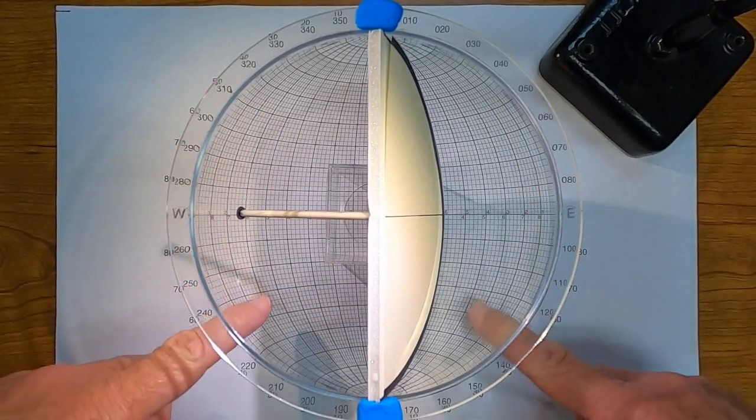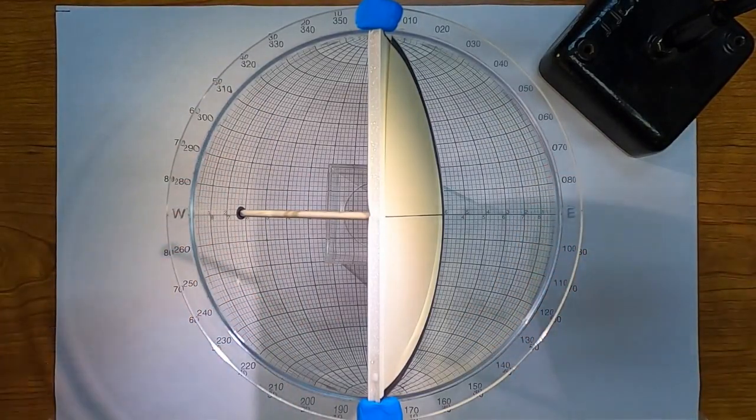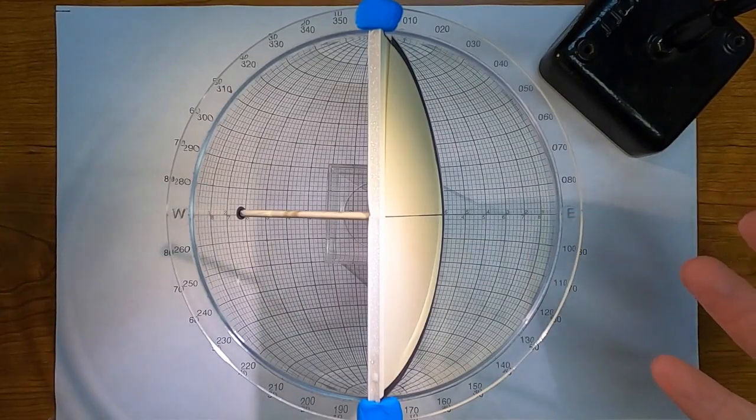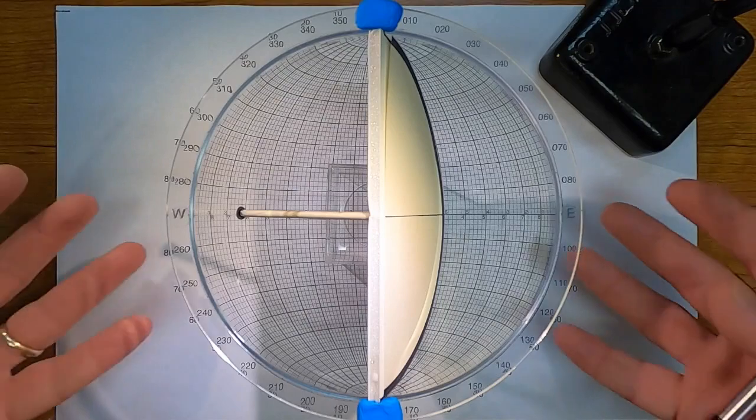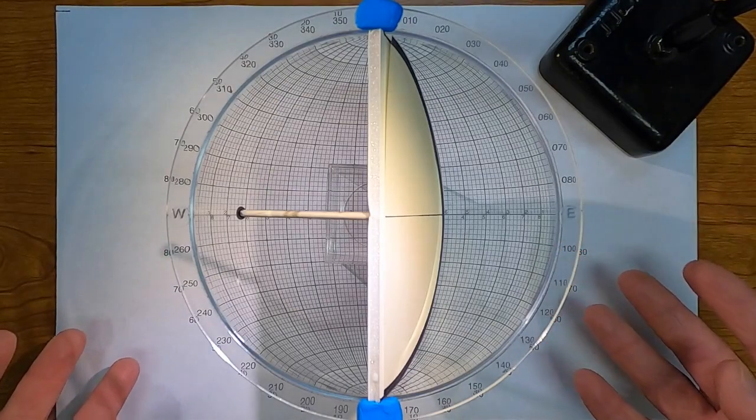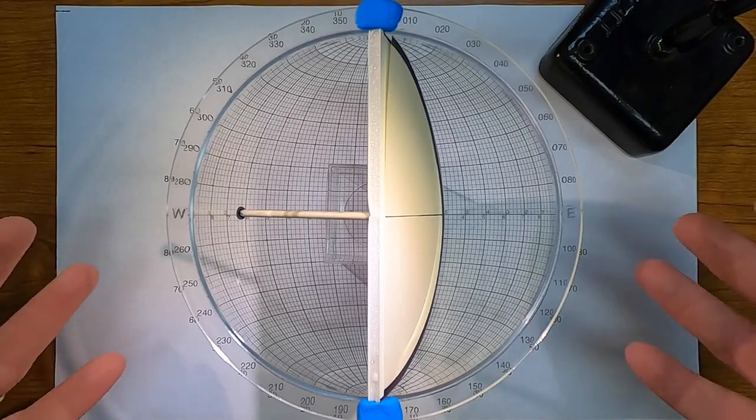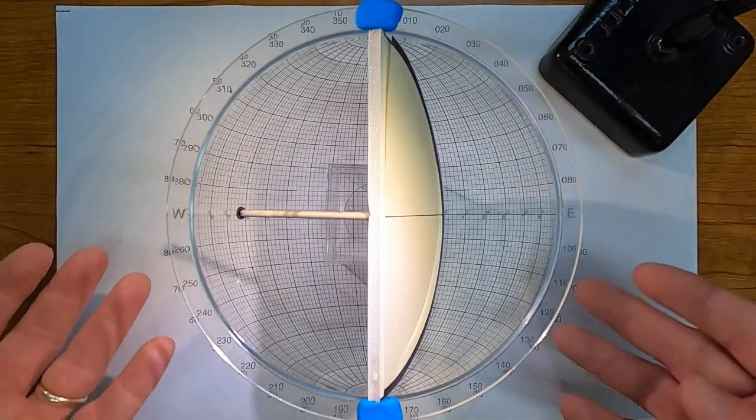The stereonet shown here is commonly used to study geometric relationships between lines and planes. This is commonly used in structural geology and actually has applications to other aspects of geology. Hence it becomes very important that you understand what the stereonet represents.